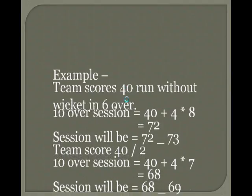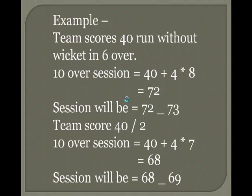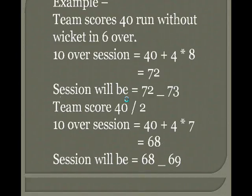Example: team scores 40 runs without wicket in 6 overs — 10-over session will be 40 plus 4 multiplied by 8 equals 72, offered at 72-73. Team scores 40 runs with 2 wickets down — 10-over session will be 40 plus 4 multiplied by 7 equals 68, offered at 68-69.